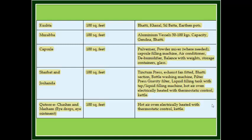Category 5: Murabba. Space required: 100 square feet. Recommended equipment: aluminum vessel of 50–100 kg capacity.